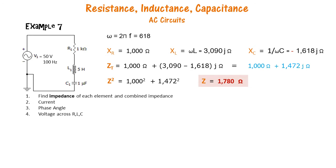So the impedance is 1780 ohms. This is the phase difference between the voltage and the current.